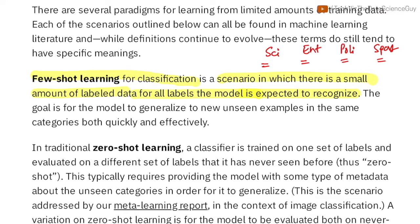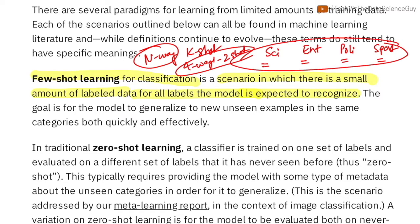What Few-Shot learning demands is you have some number of examples per class labeled by a human. For example you might have two examples for each class. Also in Few-Shot learning terminology you can call it n-way k-shot where n would mean how many classes you have, which in our case are four. So this will be four-way, and k-shot means how many examples you have for each of those classes. So let's say we have two, so this will be two-shot.